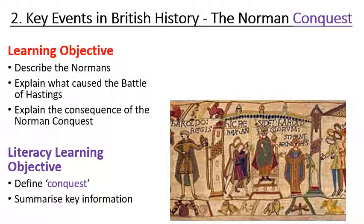Hello and welcome to the second video in our series of key events in British history. Today we're going to focus on the Norman Conquest. We're going to describe who the Normans were, explain what caused the Battle of Hastings, and briefly explain the consequences of this conquest. We're also going to look at the word conquest itself and summarize some key information.